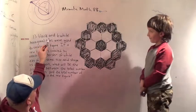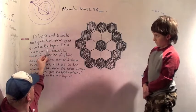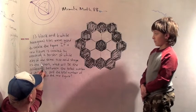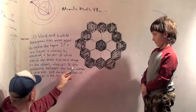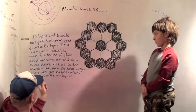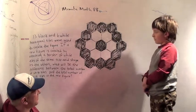Thirteen black and six white hexagonal tiles were used to create the figure. If a new figure is created by attaching a border of white tiles of the same size and shape as the others, what will be the difference between the total number of white tiles and the total number of black tiles in the new figure?